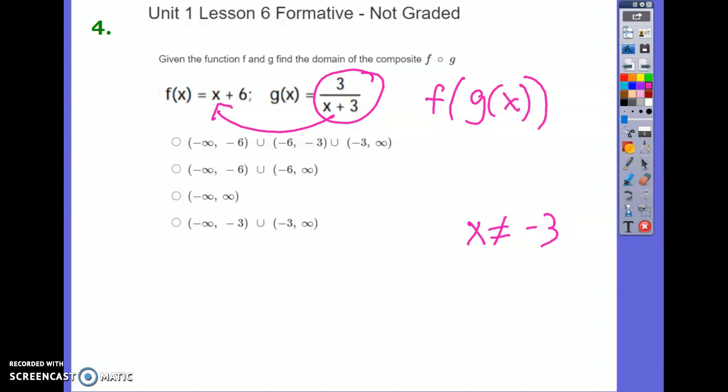Now, if I substitute in 3 over x plus 3, let me show you, all right, so let's do f of g of x, where g of x is, what's that again? 3 over x plus 3. So we'll get 3 over x plus 3 and then plus 6.